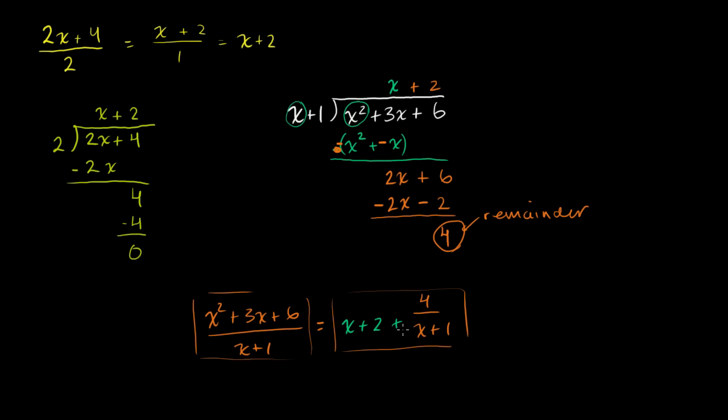And if you wanted to check that — to go from this back to the original — what you could do is multiply x plus 2 by x plus 1 over x plus 1, which is just multiplying by 1, and then add 4 over x plus 1. That gives you the same common denominator. When you multiply those two binomials and add the 4, you should get x squared plus 3x plus 6.